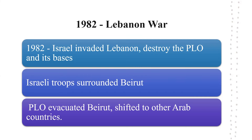In 1982, Israel invaded Lebanon to destroy the PLO and its bases. Israeli troops surrounded the Lebanese capital of Beirut, which had been PLO's headquarters for several years. After negotiations, PLO forces evacuated Beirut and shifted to other Arab countries.